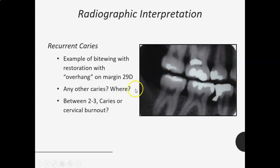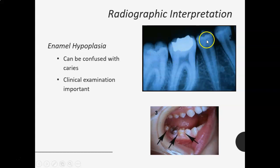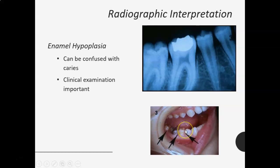Enamel hypoplasia is another finding that can look like decay on a radiograph — you can kind of see this pitted look to the enamel, with thin shadowy marks in irregular areas. It can be confused with caries, but when you clinically examine the tooth you can see a very mottled, pitted look — it's not smooth and hard like well-formed enamel. Once you've looked inside the mouth and then look at the radiograph, it makes sense.